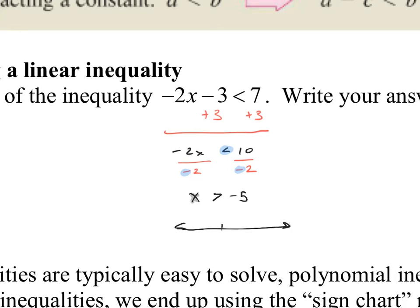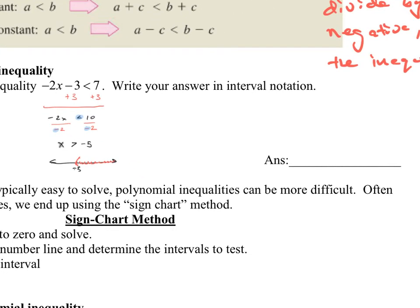Now I have my solution using an inequality, but I want to write my answer in interval notation. Think about the number line — here's negative 5. The inequality points to the right, so I shade to the right. This is x is greater than negative 5, and since we cannot equal that number, I use a parenthesis. From left to right, the answer is parenthesis negative 5, comma, infinity. Infinity always has to be in a parenthesis.